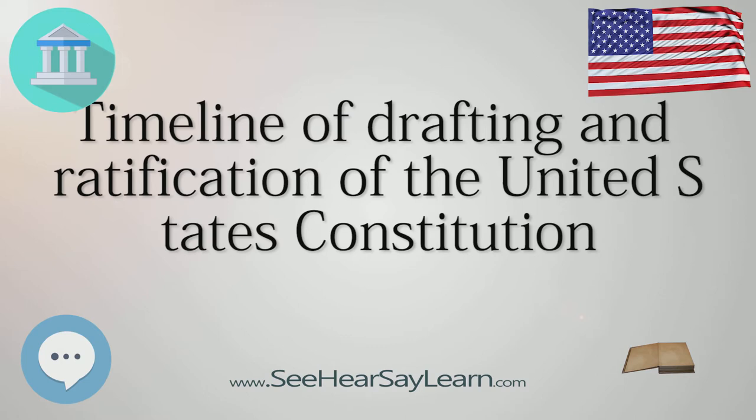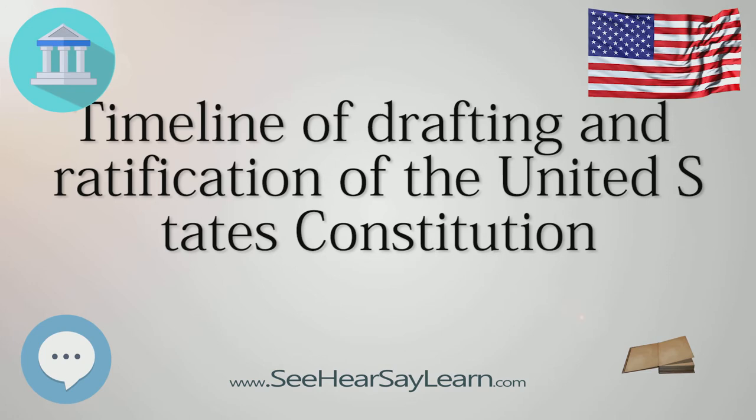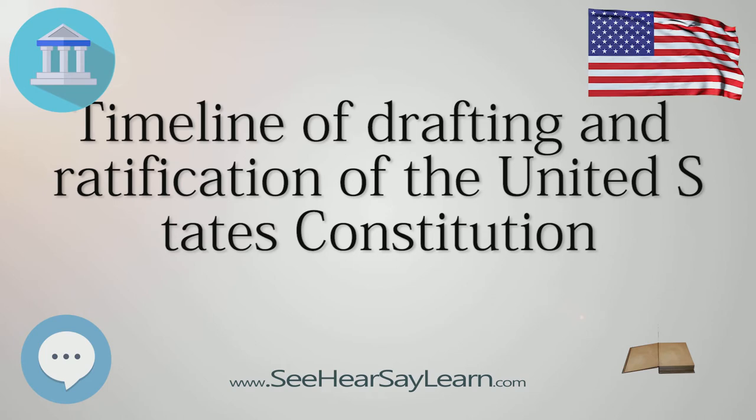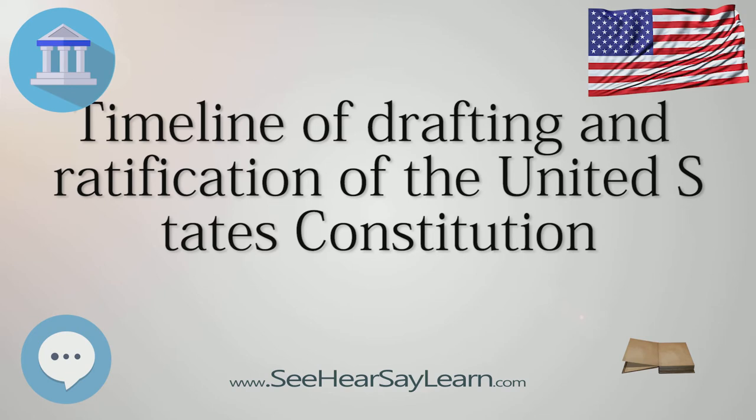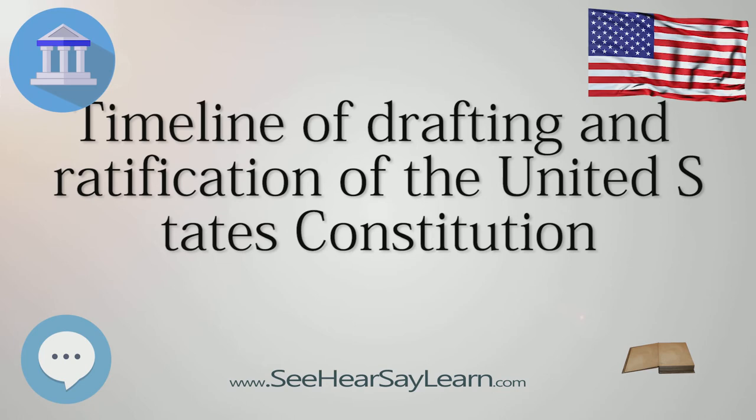April 30: George Washington is inaugurated as President of the United States at Federal Hall in New York City. Washington placed his hand upon a Bible belonging to St. John's Lodge No. 1, AYM, as Chancellor of New York Robert Livingston administered the Presidential Oath of Office.